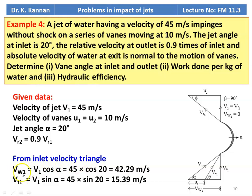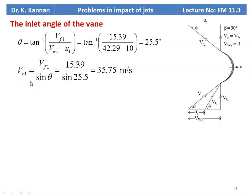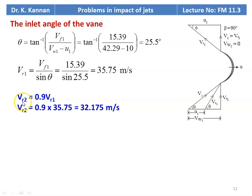From the inlet velocity triangle: Vw1 = V1 × cos(alpha) = 45 × cos(20°) = 42.29 m/s; Vf1 = V1 × sin(alpha) = 45 × sin(20°) = 15.39 m/s. Inlet vane angle theta = tan⁻¹(Vf1 / (Vw1 − U1)) = tan⁻¹(15.39 / (42.29 − 10)) = 25.5°. Vr1 = Vf1 / sin(theta) = 15.39 / sin(25.5°) = 35.75 m/s. Relative velocity at outlet Vr2 = 0.9 × 35.75 = 32.175 m/s.